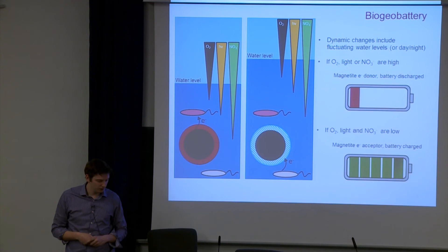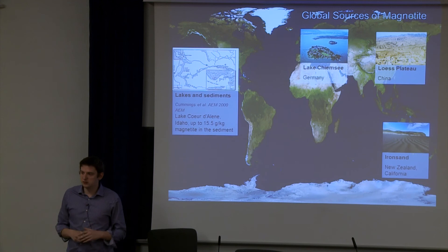It extends to various different environments because around the world, there is a large abundance of magnetite, whether it's in lakes and sediments, in these Chinese loess plateaus, or in iron sands found in New Zealand and California. These are just some examples.